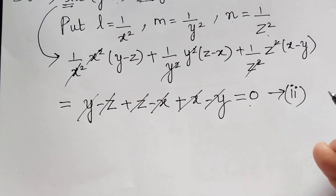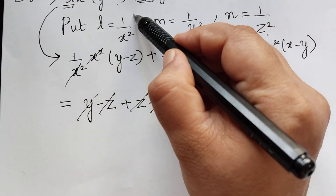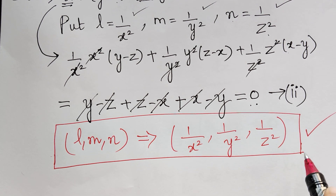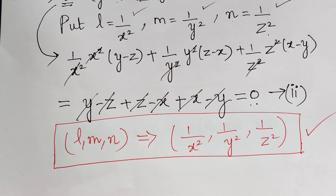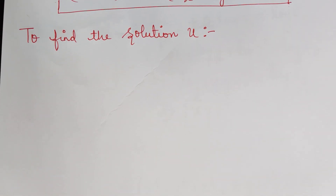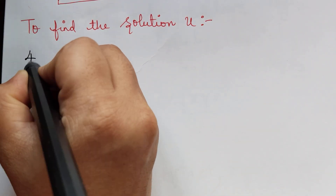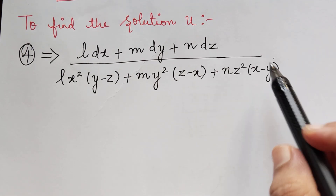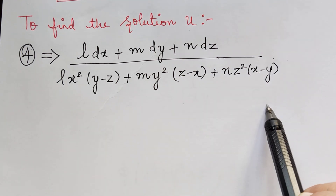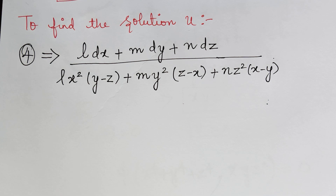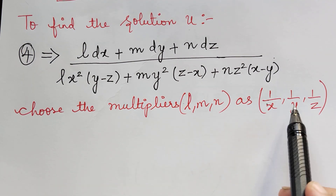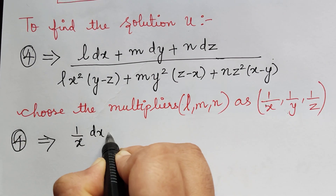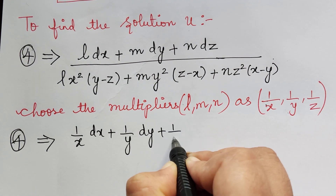We mark this result as (2). Since the denominator is zero, the second set of multipliers is L = 1 by x squared, M = 1 by y squared, N = 1 by z squared. We have now found both sets of multipliers. To find the general solution, we first find solution U. We take the fourth ratio we have obtained; the fourth ratio's numerator uses the first set of multipliers.